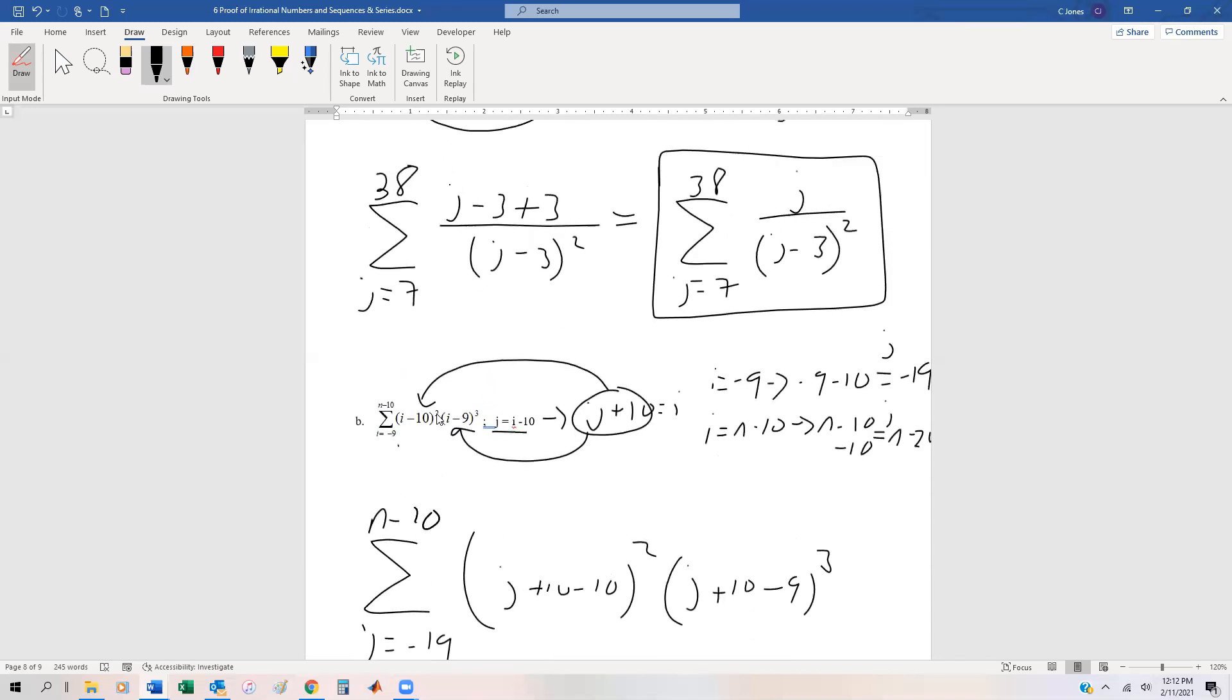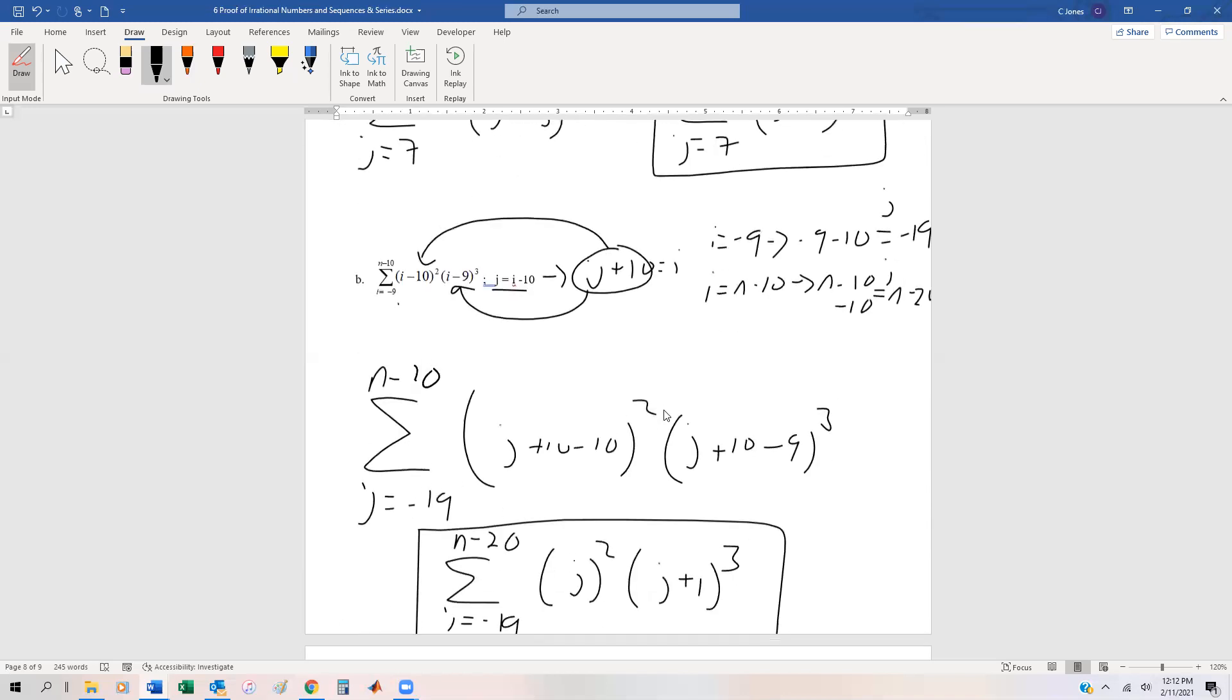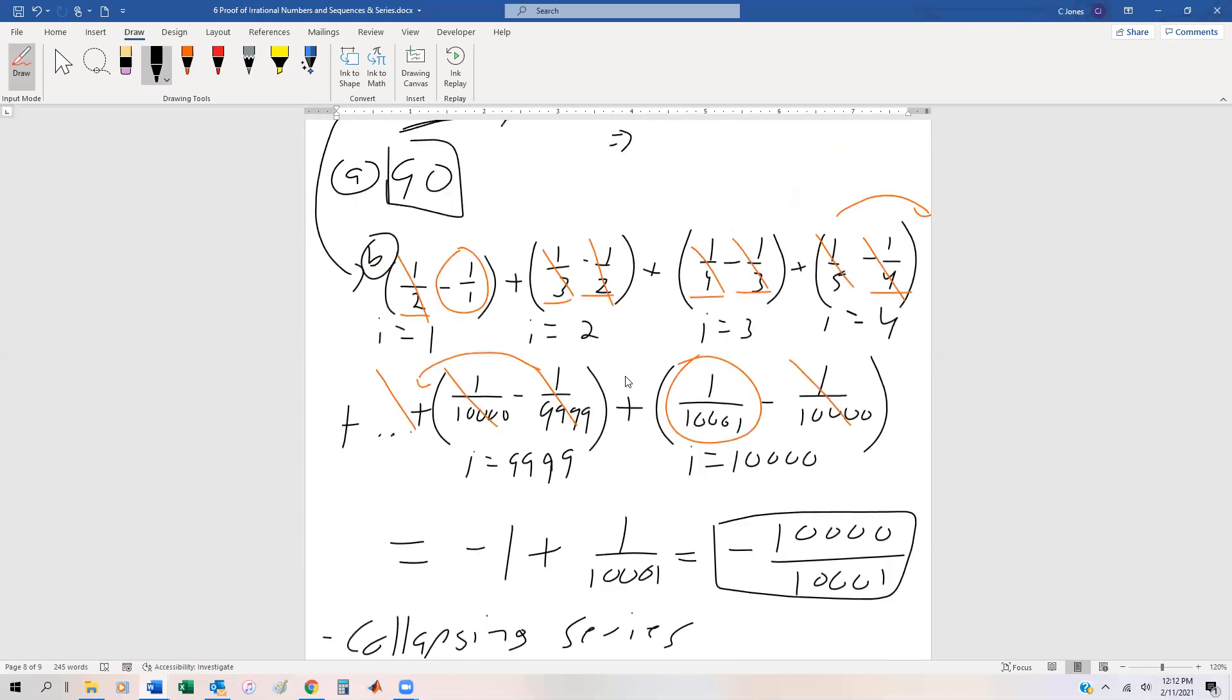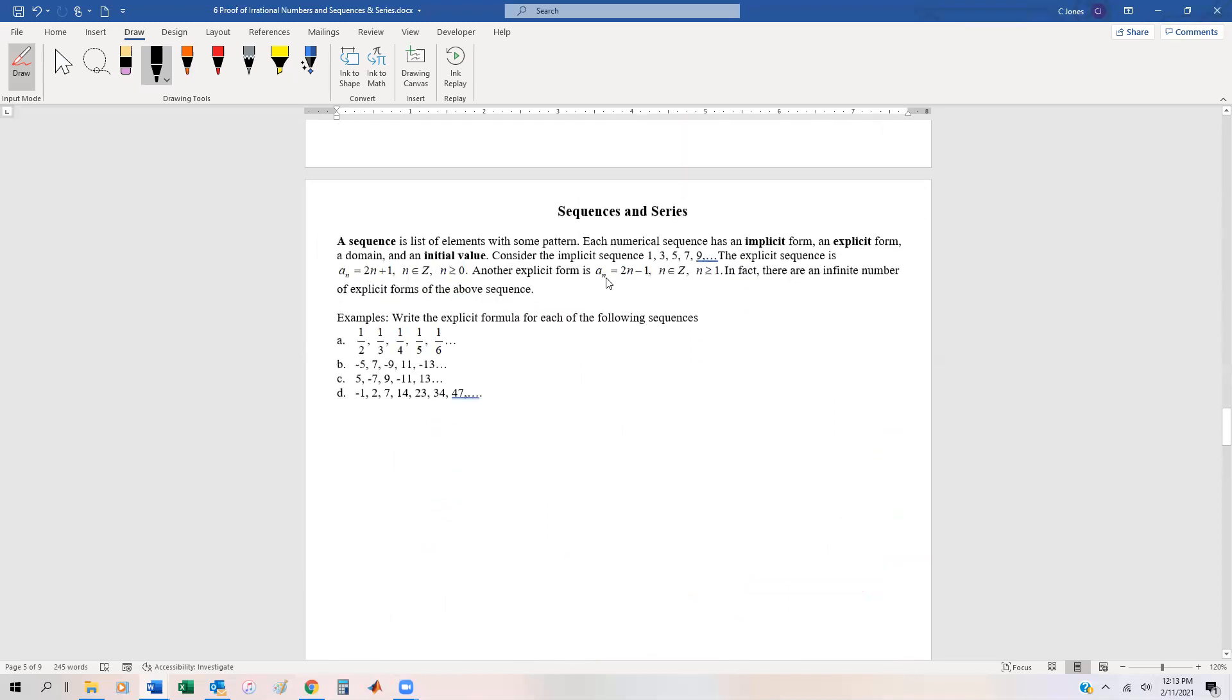All we're doing is just shifting the index. It's actually very similar to up top when we just did the explicit series where we were just shifting the index. If we look back up here, we just shifted the index by one, and same thing right here. So just a change of variable when we did that.